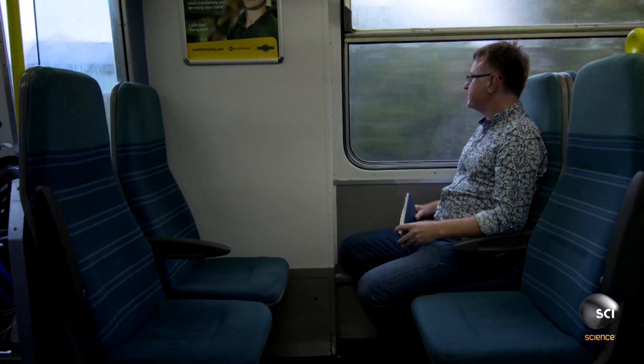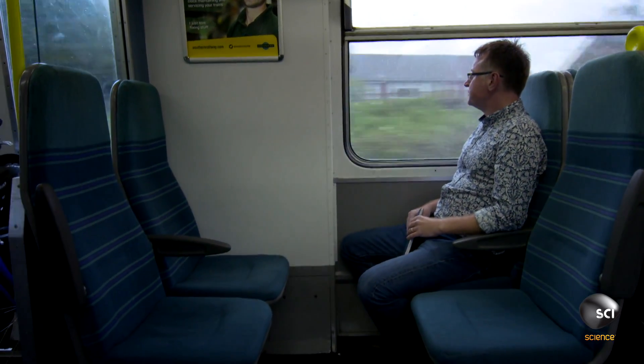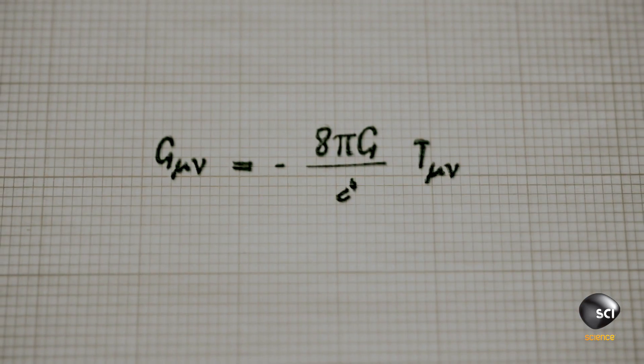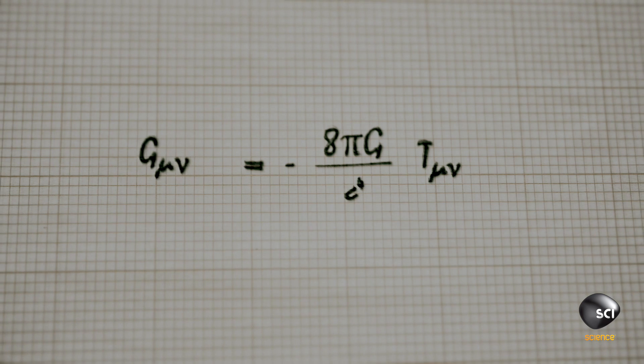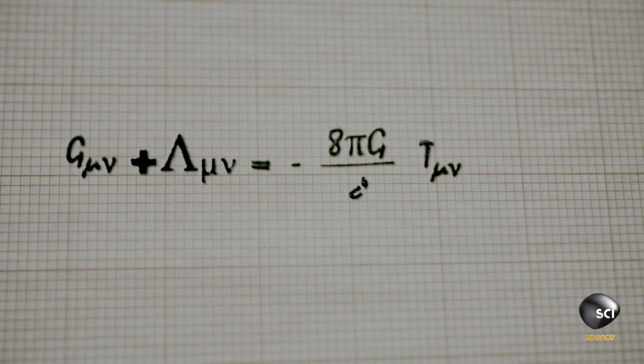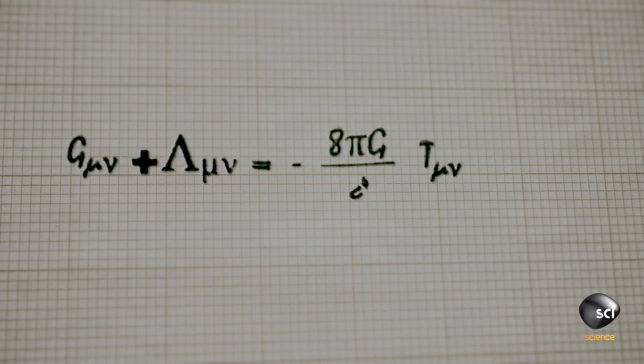So he put in an extra term into the equation. He called it the cosmological constant. He used the Greek variable lambda. But effectively, it was really just what a physics undergraduate would call a fudge factor — it was just designed to make the equations come out right, and it would just make the universe sort of stand still.